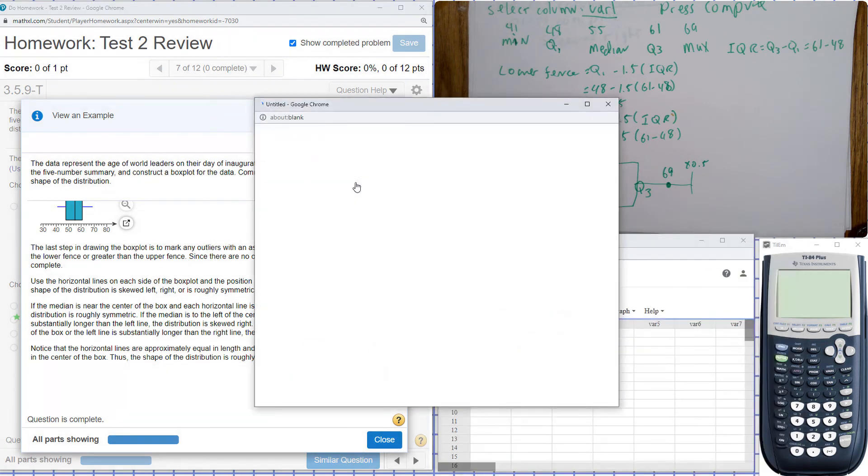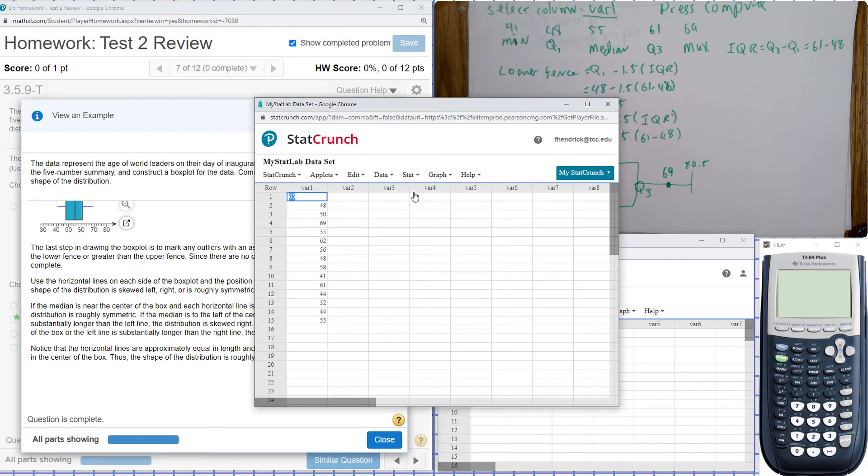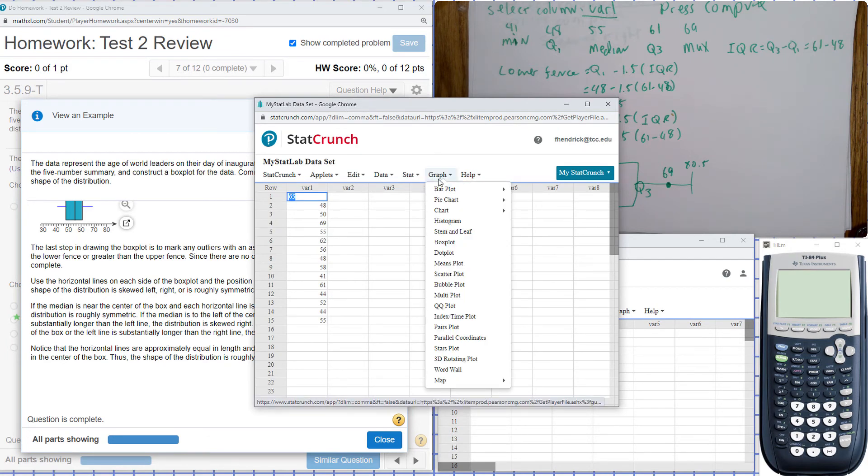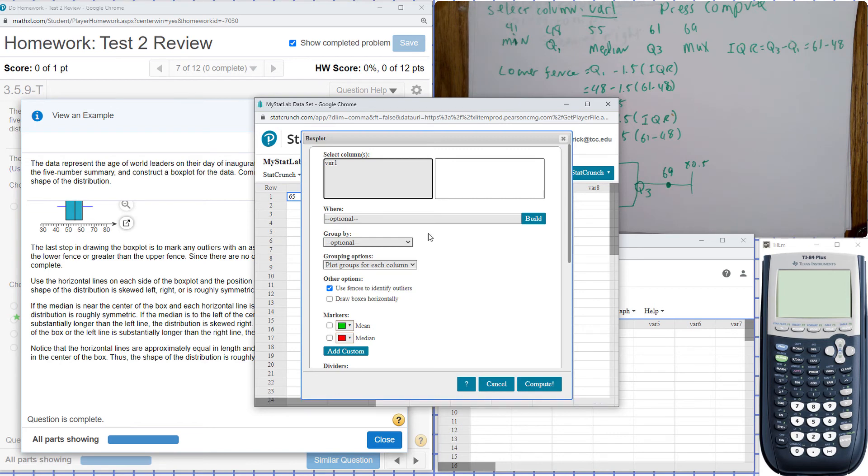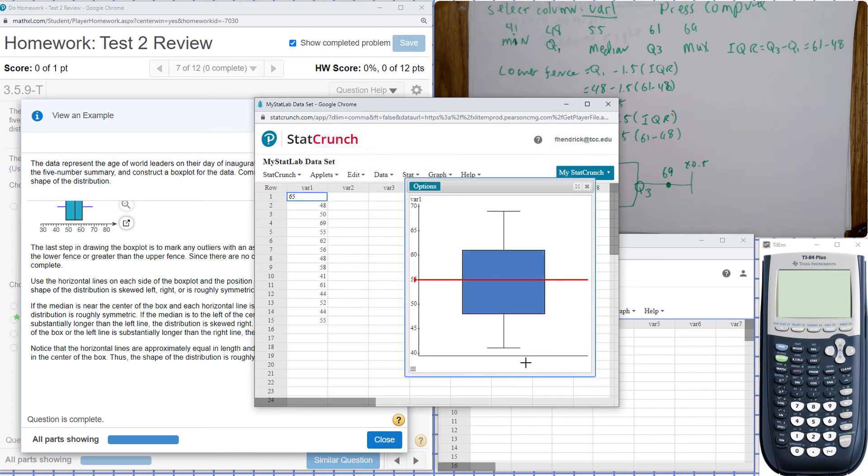Open StatCrunch, go to Graph, select Box Plot, hit var, and I'll mark here to show the median. Hit compute. You can see where the median is. It's basically almost a perfectly symmetric distribution.